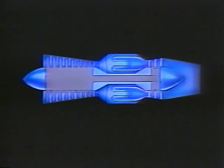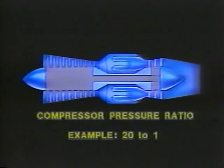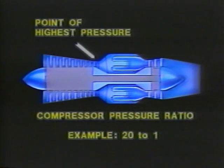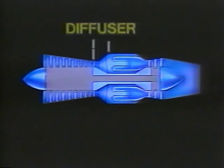How much air pressure will the compressor develop? If it increases the pressure of the incoming air by 20 times, we say it has a pressure ratio of 20 to 1. With a ratio like that operating at sea level, it would boost the incoming air to almost 300 pounds per square inch. Compressors today have pressure ratios of 20 to 1 or better. Another point: the highest pressure within an engine of this type is always at the compressor exit.